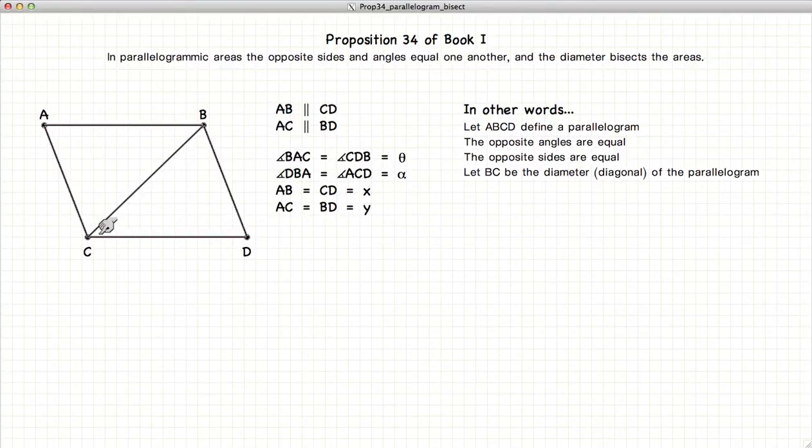In other words, the triangle ABC is equal to the area BDC. So let's demonstrate this.